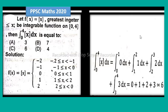The problem is: Let f(x) = [x], greatest integer less than or equal to x, be integrable function on closed interval [0,4]. Then integral from 0 to 4 of [x] dx is equal to?